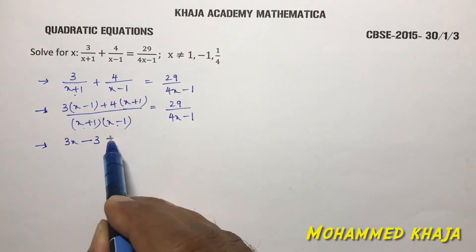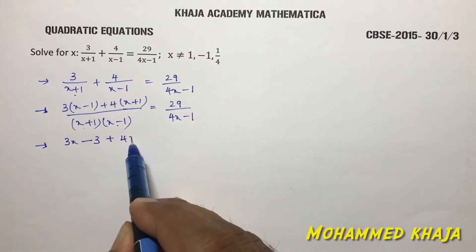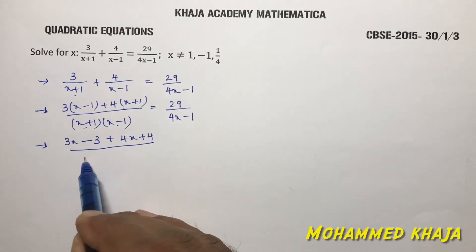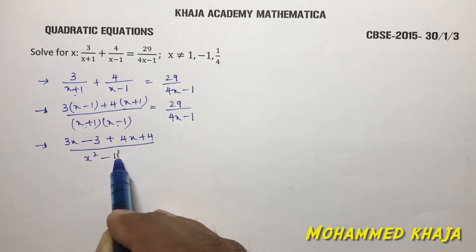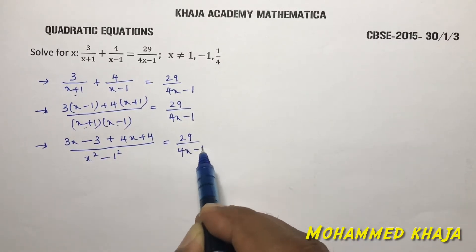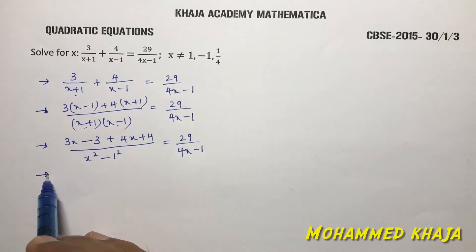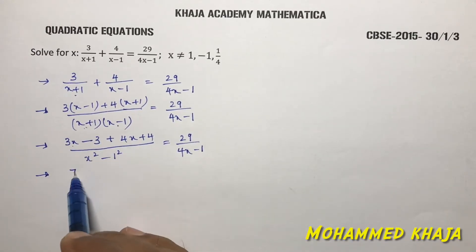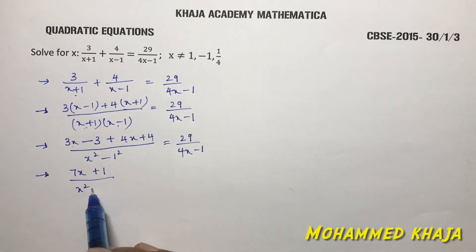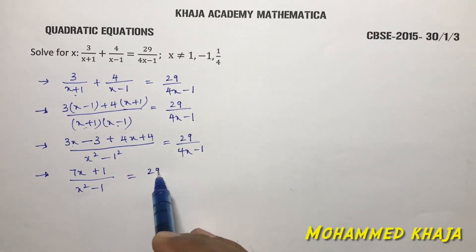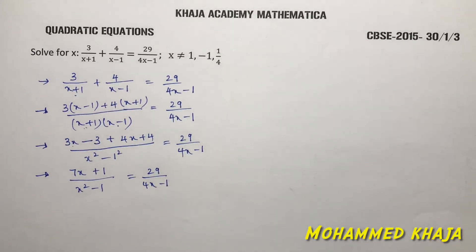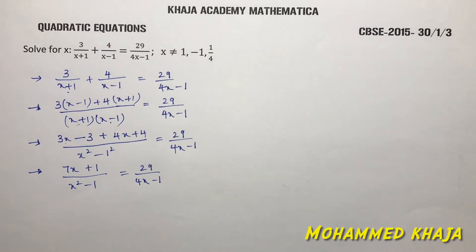Expanding the numerator: 3x - 3 + 4x + 4. The denominator (x+1)(x-1) = x² - 1 using the identity (a+b)(a-b) = a² - b². So the numerator simplifies to 7x + 1, giving (7x + 1)/(x² - 1) = 29/(4x - 1).